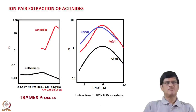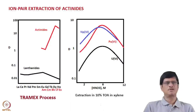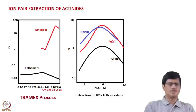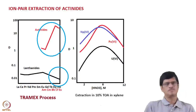Another application of ion pair extraction is the separation of trivalent actinides from lanthanides. Using 0.6 molar Alamine 336 (tricaprylamine) in xylene with an aqueous medium of 11 molar LiCl containing 0.2 molar HCl (HCl added to prevent hydrolysis), the extraction of actinides is significantly larger compared to lanthanides. This allows trivalent actinides to be separated from trivalent lanthanides, which have relatively lower distribution ratio values.